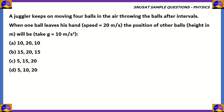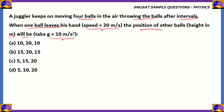Now, let's move on to another question. A juggler keeps on moving 4 balls in the air, throwing the balls after intervals. When one ball leaves his hand and the speed is given as 20 meters per second, the position of the other balls in meters will be — taking G as 10 meters per second squared — is it 10, 20, 10; or 15, 20, 15; or 20, 15, 5; or 15, 20, 5, 10, 20?